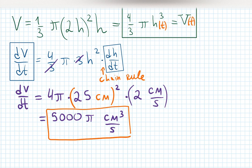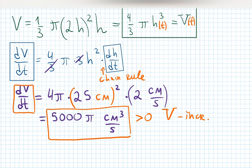The answer becomes 4 times 25-squared is 5000, so dV/dt equals 5000π. For units: centimeters squared times centimeters per second gives centimeters cubed per second — and indeed that's volume change per time, which makes sense. The derivative is positive, so the volume is increasing, which makes sense because we're accumulating sand. If units don't match, you likely lost the chain rule somewhere.